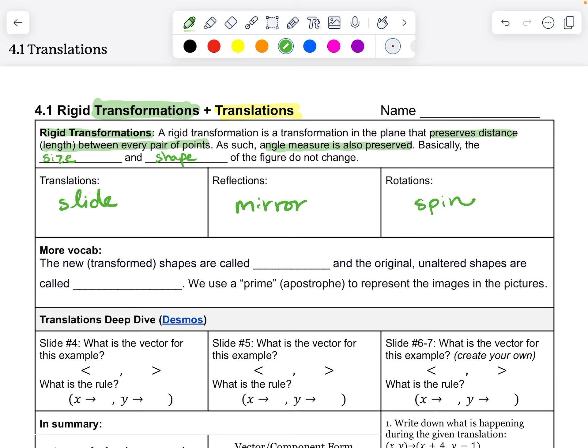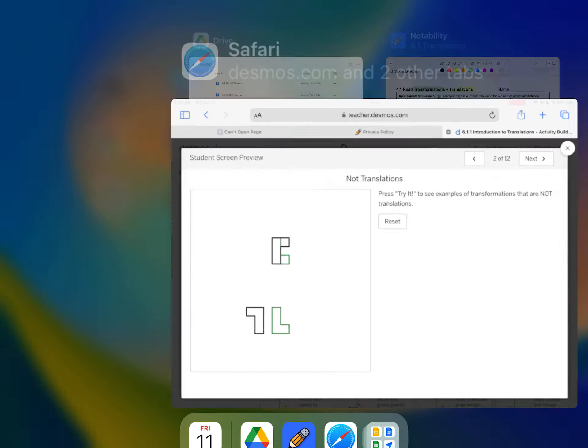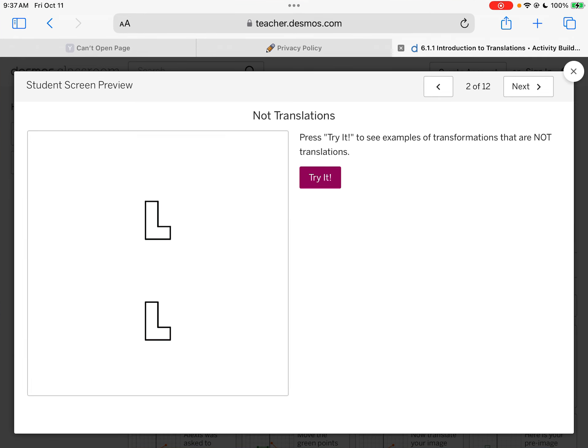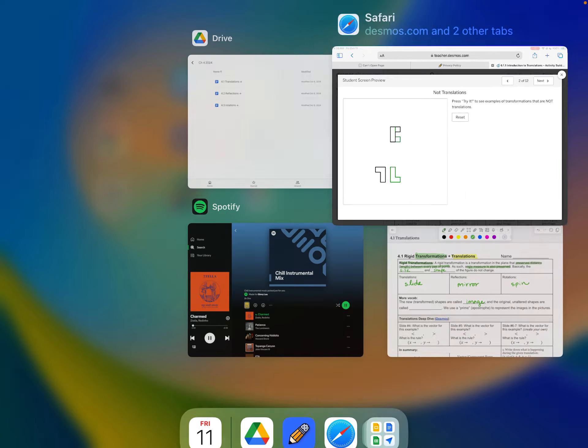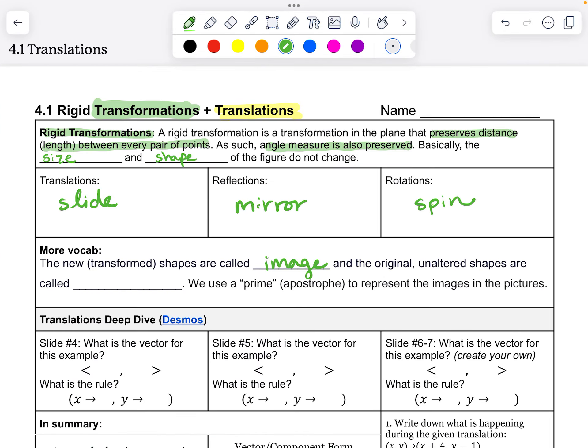The new shapes are called the image. When you have a new shape, it's called an image. All of these black shapes are my pre-image. And then I have an image, the thing after it. The image is the new one. The OG is called the pre-image. And we use a prime to notate it.